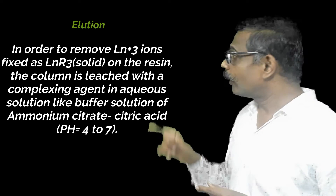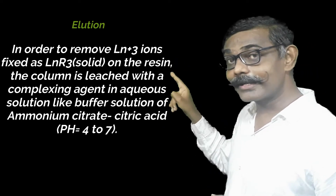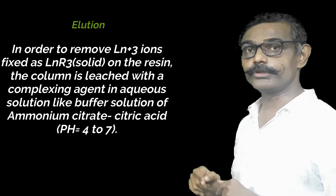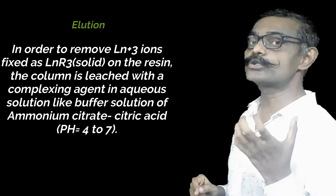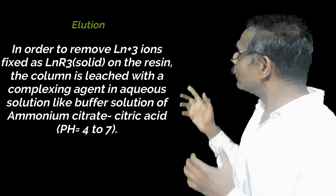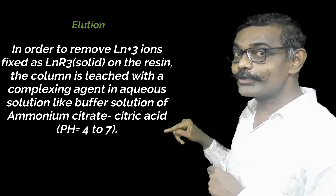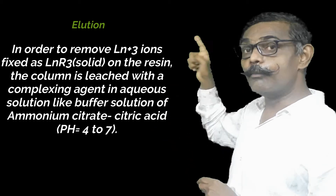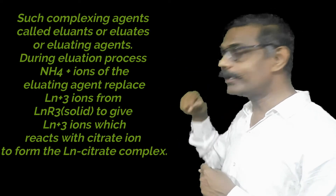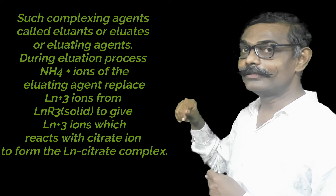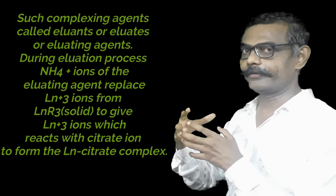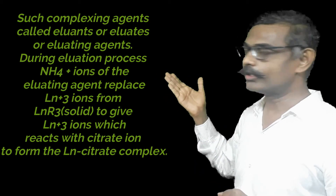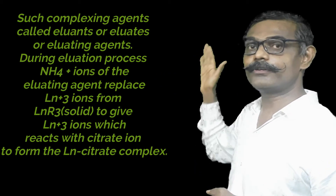In order to remove lanthanoids from the resin — the process called elution — an eluting agent is used. This is a buffer solution with pH between 4 and 7. The buffer used is ammonium citrate and citric acid. Ammonium is used to remove the lanthanoids, while citric acid is used to form complexes — citrate ions can form chelates, establishing an additional equilibrium.